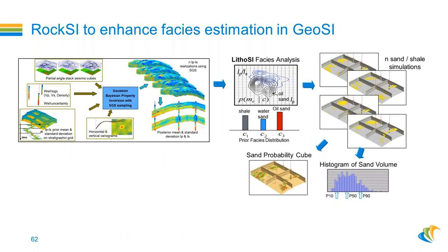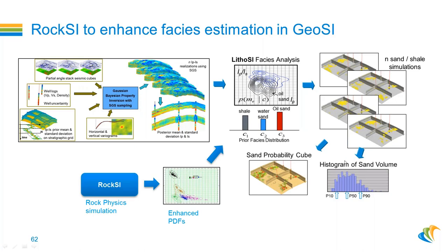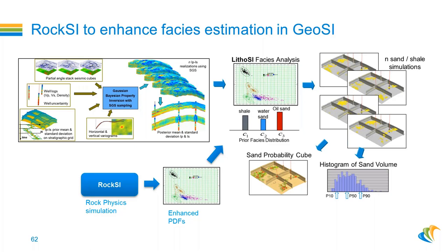The full workflow for geostatic or stochastic inversion: do multiple realizations of elastic properties, put them inside LITOSI, get multiple realizations of lithotypes, then obtain sand probability and rank them to get P10, P50, P90 volumes. To enhance further, use RUCSI again to create simulated data, get enhanced PDFs, input those enhanced PDFs into GOSI's facies classification module, and get better facies classification, better ranking, and better probability estimation.